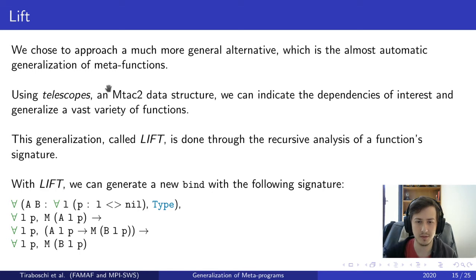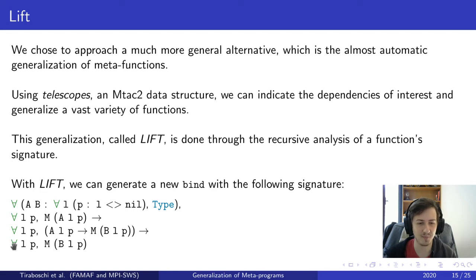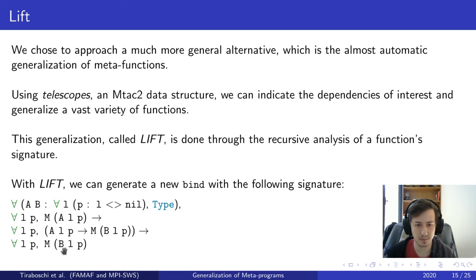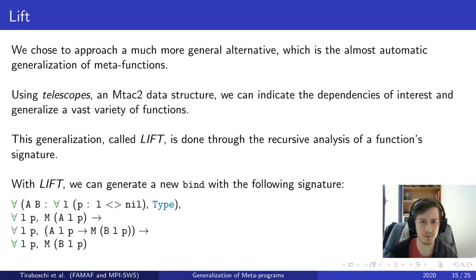With LIFT we can generate the new bind that we actually want. I just want you to notice that the signature now returns a function — it has the M at the beginning, but it's inside a for-all where we can put the list and proof, and then we have a type that depends on the list and proof. That is basically what we are looking for, and we'll try to build up to that signature in a minute.